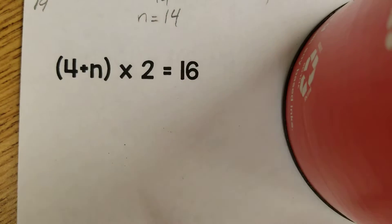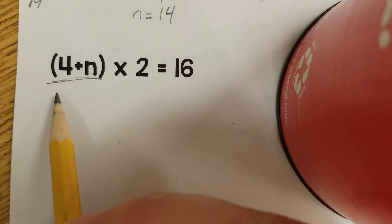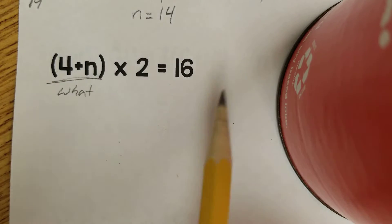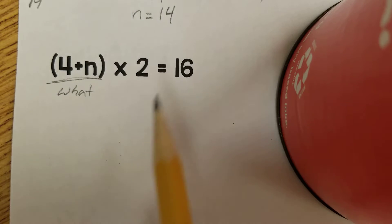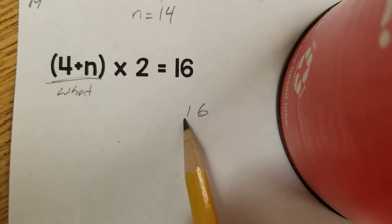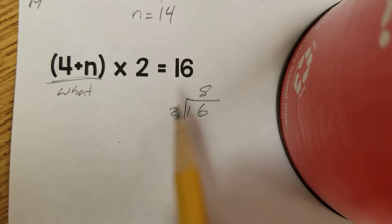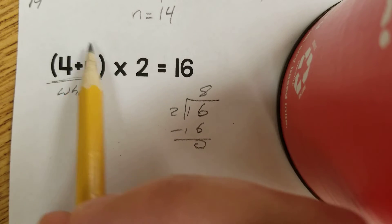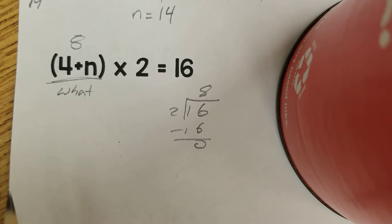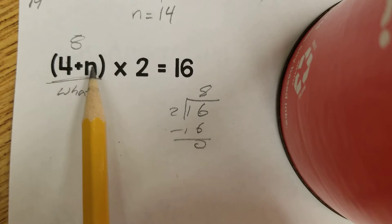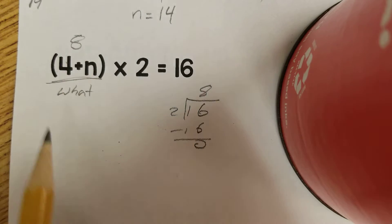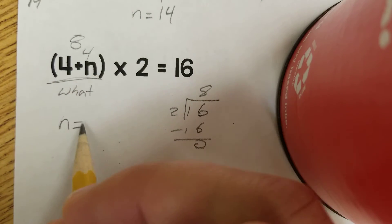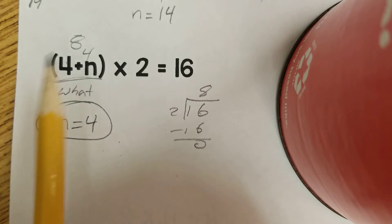This one already has our expression, we just have to solve it. We have (4 + n) times 2 equals 16. So: what times 2 equals 16? Most of you know that, but we can do 16 divided by 2 and get 8. So the parentheses has to equal 8. Well, 4 plus what equals 8? 4 plus 4 equals 8, so n equals 4. Check: 4 plus 4 is 8, and 8 times 2 is 16.